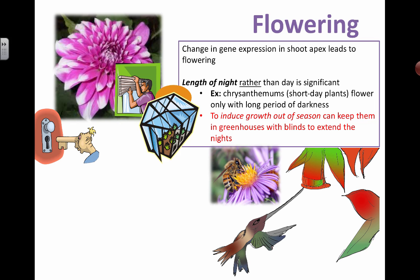So what can we do if the chrysanthemum is a short day plant and we happen to be at a part of the year where we don't have short days — it's actually long days like during the summertime? Does that mean no more chrysanthemums? No. All you have to do is put it in the greenhouse and put some blinds — not very sophisticated — and you basically trick the plants into thinking that it's nighttime. How cool is that?